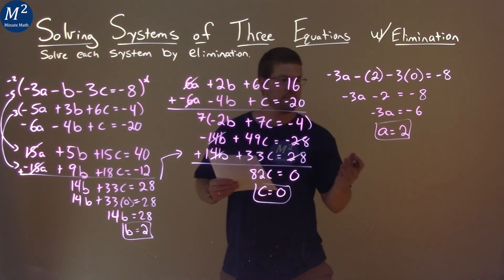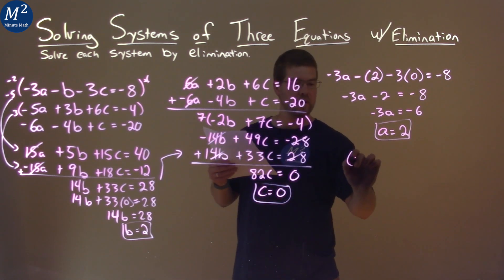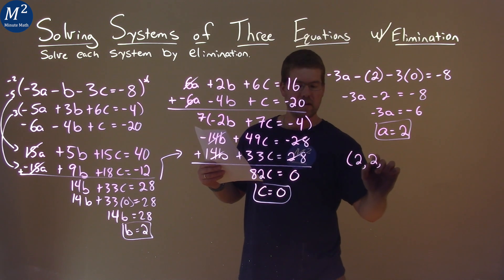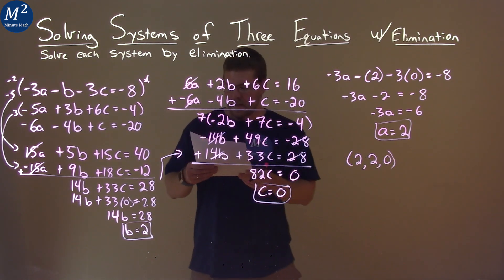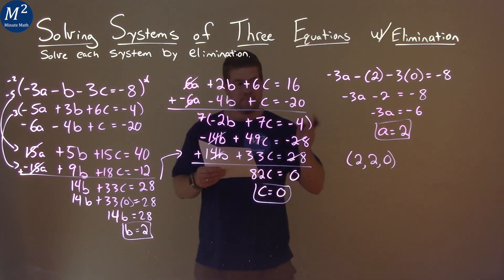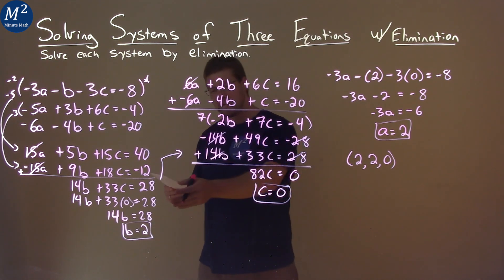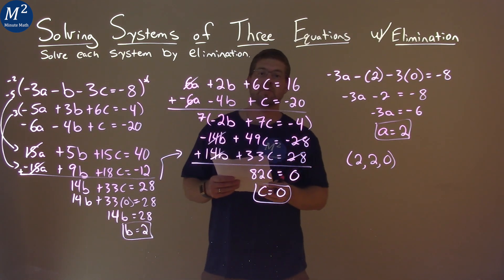And so we have our answers here. We can write as a coordinate point. a comes first, then b, so 2, 2. Then c value is 0. And there we have our final answer. a is equal to 2, b is equal to 2, and c is equal to 0.